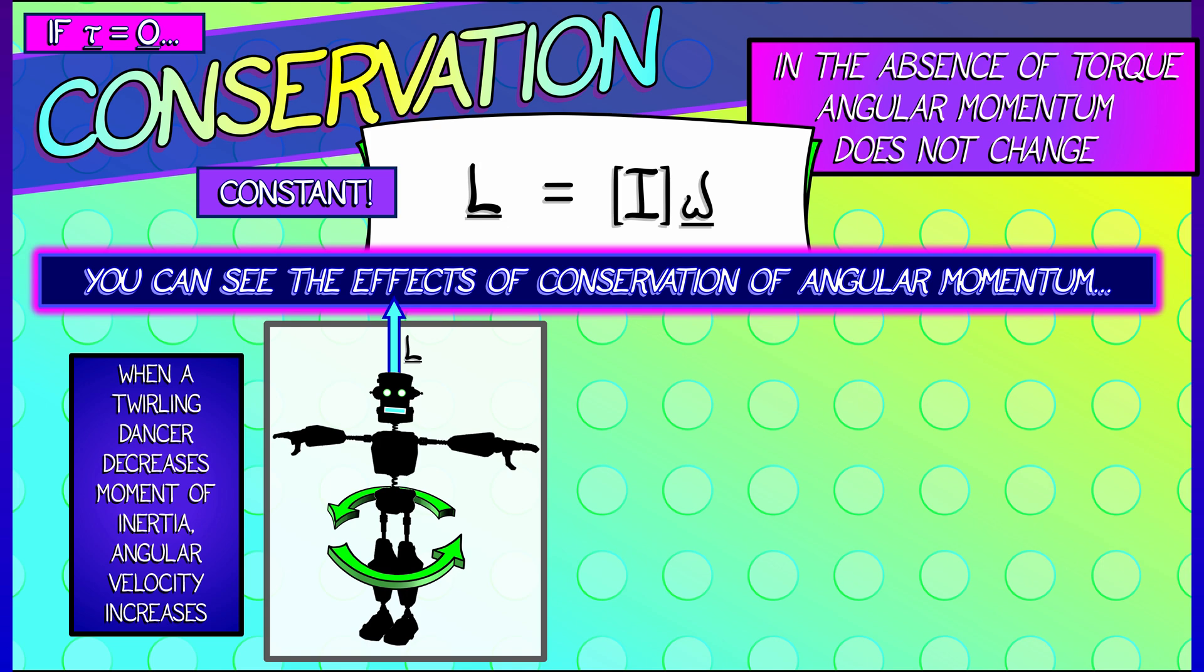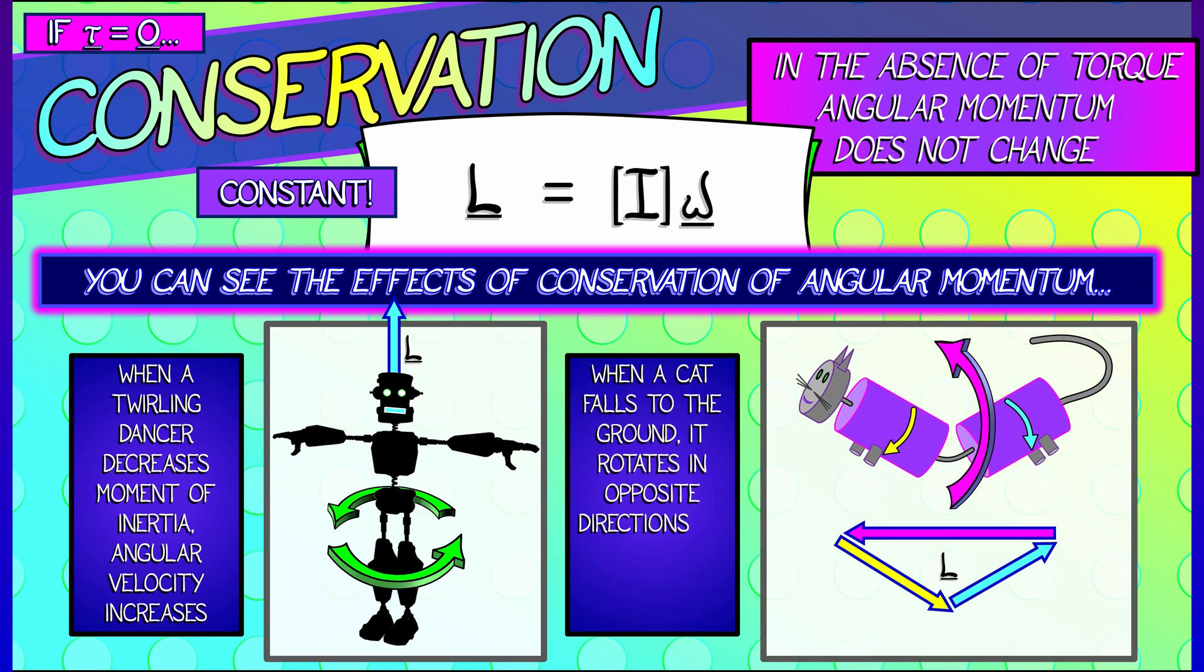Or likewise, let's say you have the paradigmatic cat falling to Earth and turning over as it does so. The way that this works is it's rotating components of its body in different directions from the body as a whole,